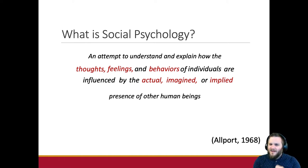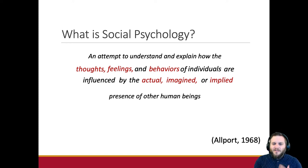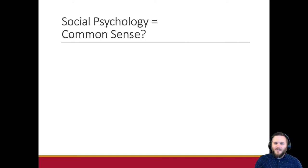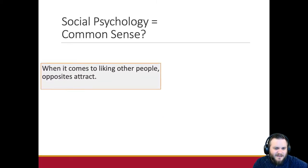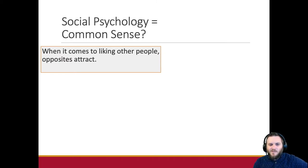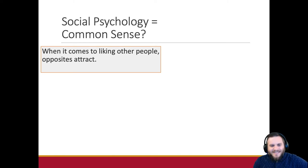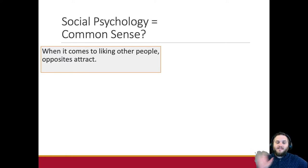But you say, why on earth do we need a bunch of scientists to do this when we do it ourselves all the time? Of course social psychology is just common sense, right? Hmm. Take 'opposites attract' — not so much. There is way, way more evidence for similarity in liking rather than dissimilarity.